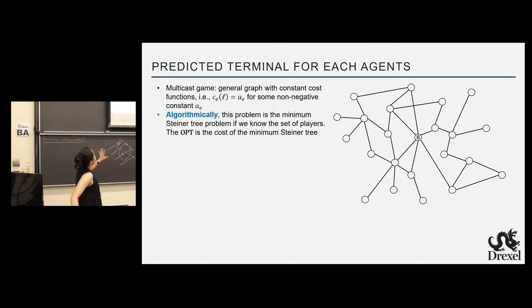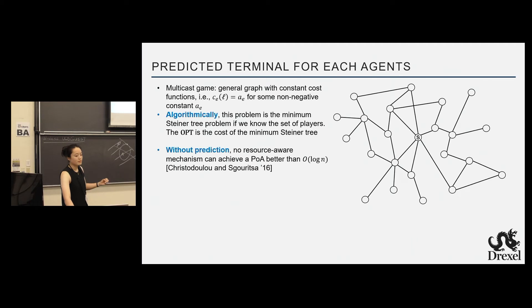So again, to formally define the setting, multicast game is a general graph with constant cost functions. So it's a simpler setting where all of the costs are just constant. Algorithmically, if we have full control over the results, if we know the terminals, if we have full control over the outcome, it's just a minimum Steiner tree problem where you just take all of the terminals and the source and run the minimum Steiner tree algorithm. Now, adding a little bit difficulty without a prediction, like we said before, all of a sudden, if you don't know the set of users, no resource-aware mechanism can achieve a price of anarchy better than log n.